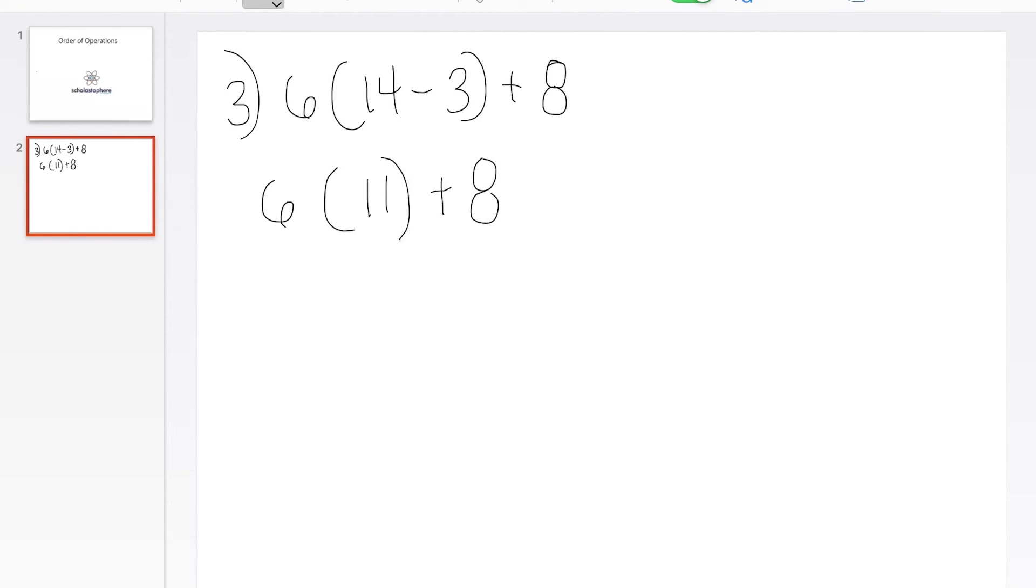Now we're going to look at the new written sentence of this math problem and look and see, what are the new operations and which one takes priority. So we have a distribution of the 6 or multiplication, and then we have an addition sign. So according to our acronym, the multiplication comes before addition.